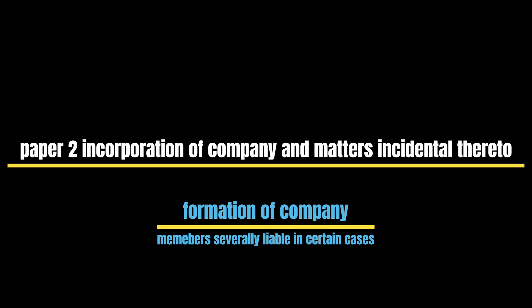Further, Subsection 2 to Section 3 provides that a company formed as specified above may be incorporated either as Companies Limited by Shares, Companies Limited by Guarantee, or as an Unlimited Liability Company. Note: A Limited Liability Company may be a Company Limited by Guarantee as well as Shares.